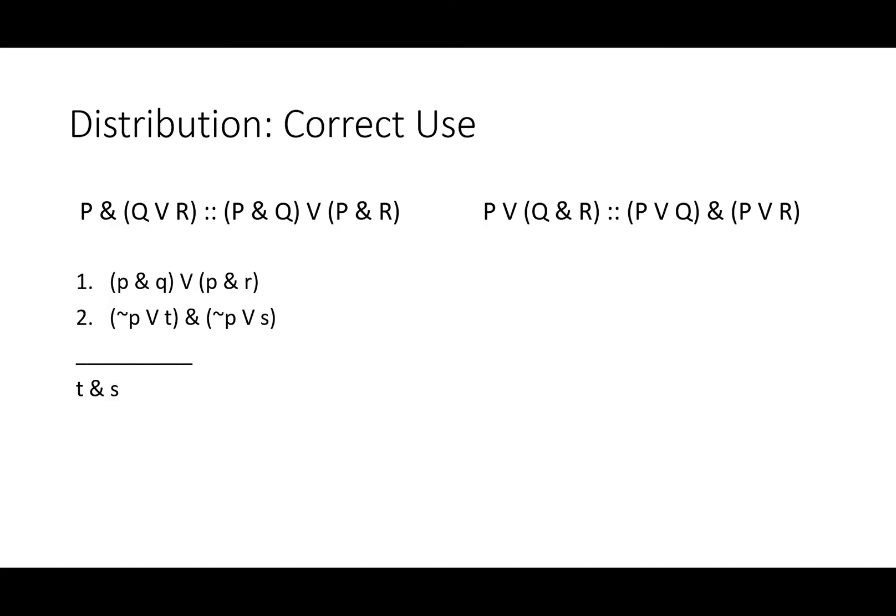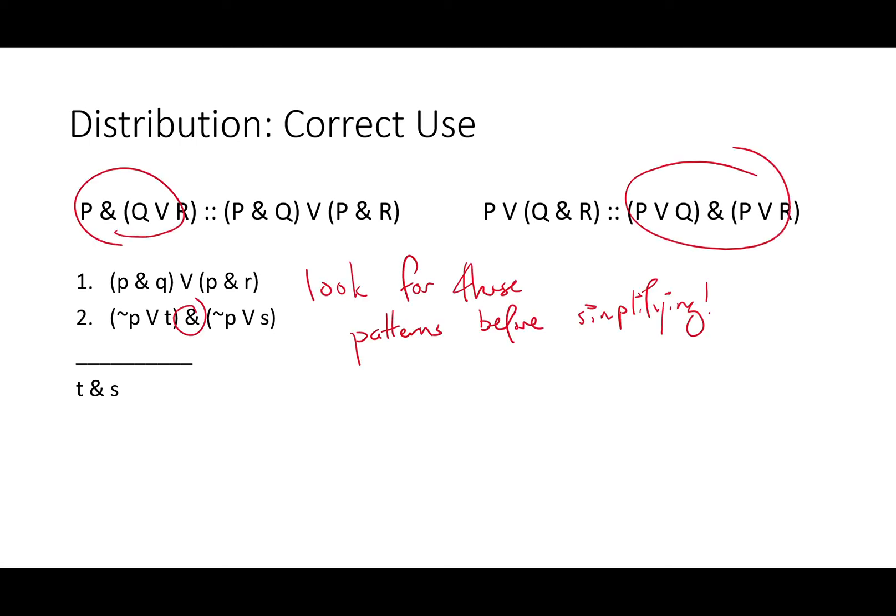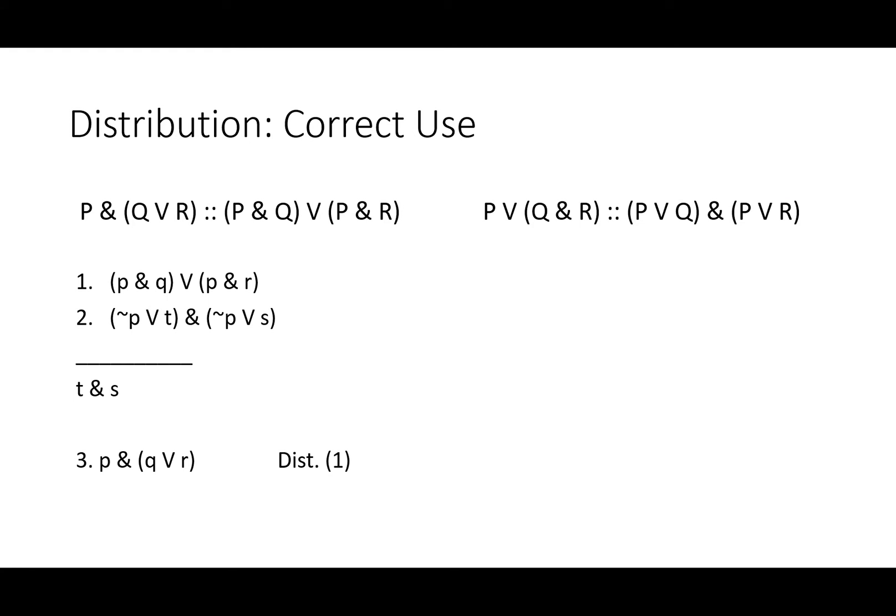Let's take a look at some correct use of distribution in a proof. We're going to see both versions of this rule used at least once. Line one says '(P AND Q) OR (P AND R)' — that's a good candidate for distribution. Line two says '(NOT P OR T) AND (NOT P OR S)' — another good candidate. The conclusion is T AND S. Look for these patterns before doing simplification. If you see an AND and do simplification right away, that would be the long way around in this proof. Instead, we'll do distribution.